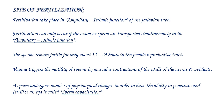Sperms remain fertile for only about 12 to 24 hours in the female reproductive tract. The vagina triggers the motility of sperms by muscular contractions of the walls of the uterus and oviducts. Sperms undergo a number of physiological changes in order to acquire the ability to penetrate and fertilize an egg, a process called sperm capacitation.